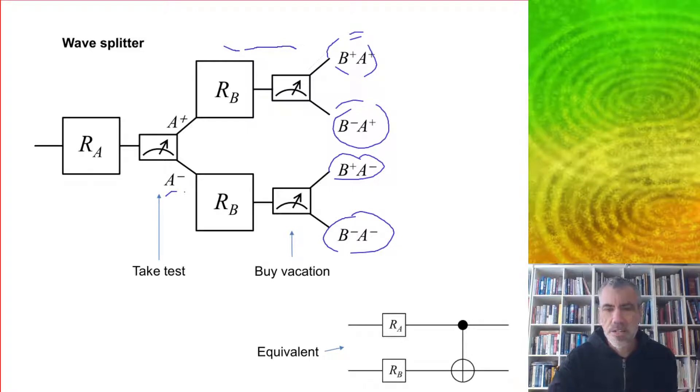It turns out that this circuit here is equivalent. This is a one-qubit input version with measurement at two different stages. This is a two-qubit version where the test is acting as a control on our final decision.